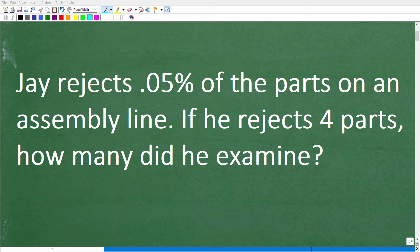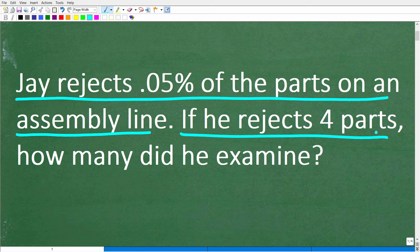Okay, so get ready to put your math skills to work to solve this interesting math word problem. Let me go ahead and read the problem. Jay rejects 0.05% of the parts on an assembly line. If he rejects 4 parts, how many did he examine?